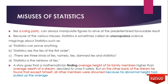Now let's discuss some misuses of statistics. Even in an opinion poll, a ruling party can always manipulate figures to arrive at a predetermined result. Because of various misuses, statistics is sometimes called an 'unscrupulous science.' Common misgivings include: 'statistics can prove anything,' 'statistics are lies of the first order,' 'there are three kinds of lies — lies, damn lies, and statistics,' and 'statistics is the rainbow of lies.'